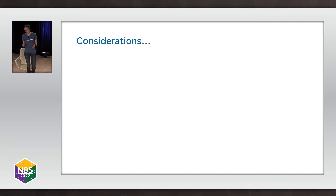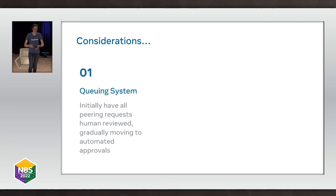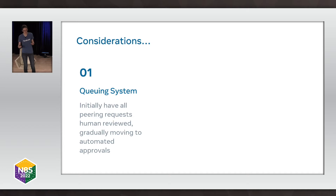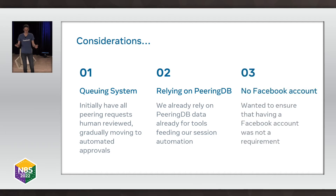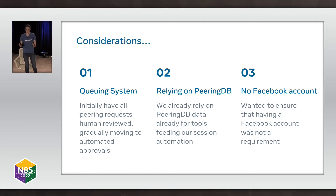There were a number of considerations when we were setting this up. First, we wanted a queuing system so we could be confident our services were doing what we expected, making sure we were acting correctly. Gradually, we've been moving to more automated approvals as we get more confident in our system. Secondly, we've taken a reliance on PeeringDB OAuth — but we already required all of our peers to have a PeeringDB account before we started this, so we decided that was fine. Finally, we wanted to make sure you could hit the page without having a Facebook account.